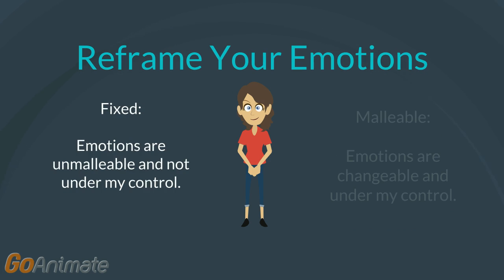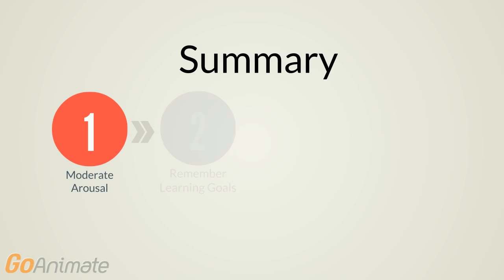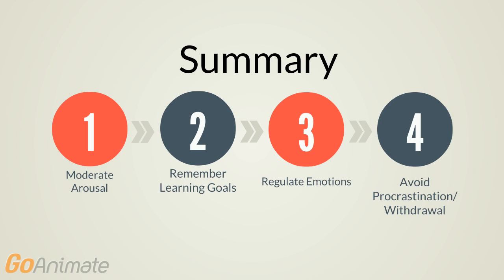Finally, anxiety involves the experience of negative emotions like sadness and anger. If you believe emotions are fixed, they are outside of your control — emotions just happen. Conversely, if you believe emotions are malleable, research shows you are more likely to self-regulate your emotions and receive more social support. In short, if you moderate your arousal, remember learning is incremental, and regulate negative emotions, you are less likely to experience anxiety leading to procrastination.